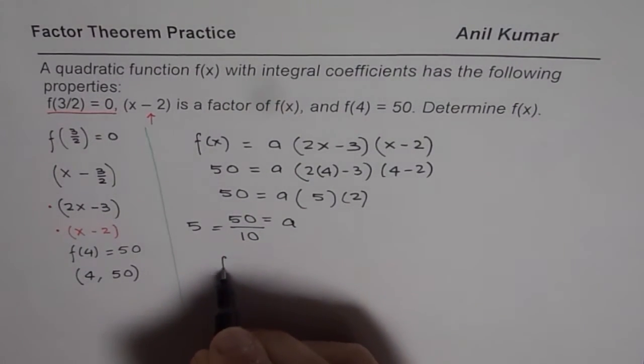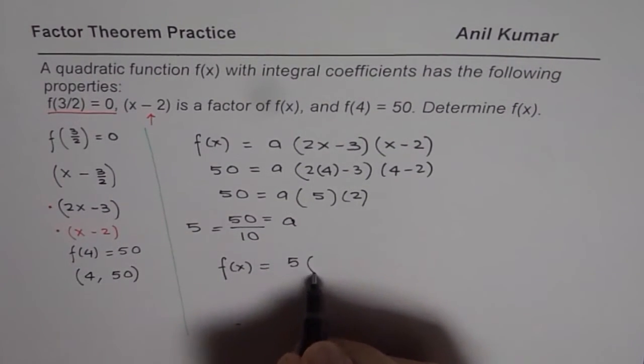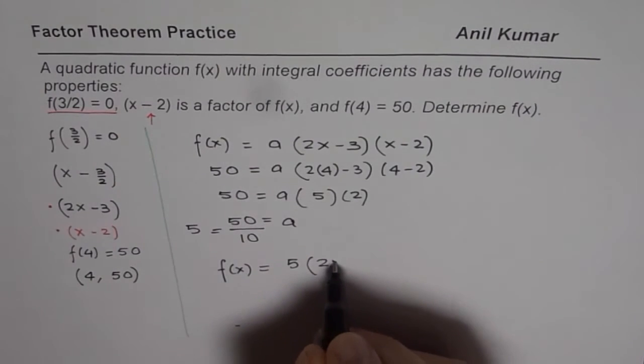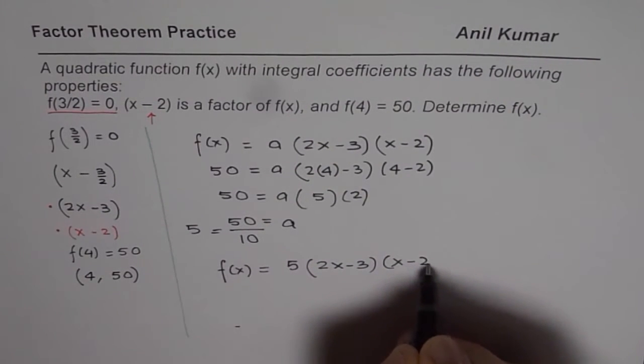Therefore, the function is f(x) equals to, a is 5 for us. We will write 5 here, and the two factors, which are 2x minus 3 times x minus 2.